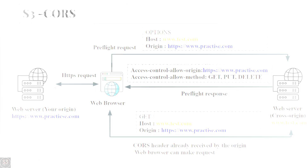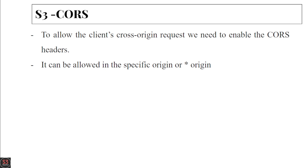To allow client cross-origin requests, we need to enable the CORS header. We go to our S3 bucket, find the CORS headers option, edit it, and enable it. We can allow requests from a specific origin or from all origins using a wildcard star.